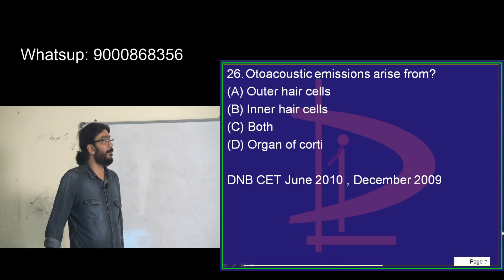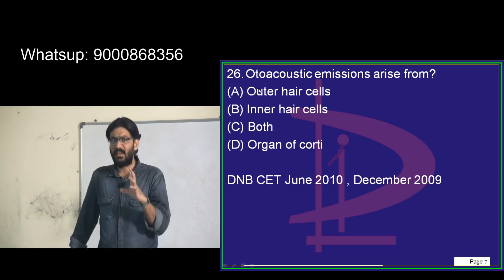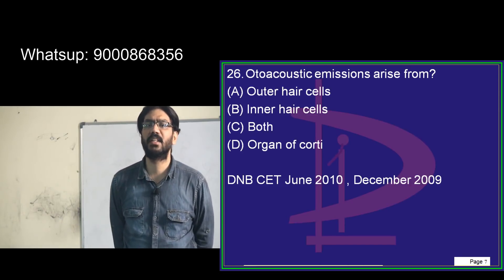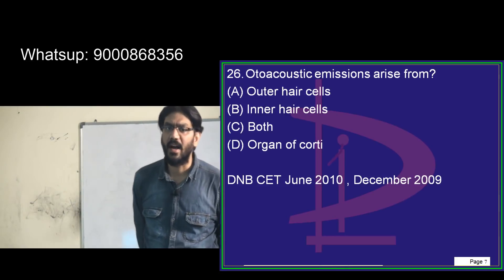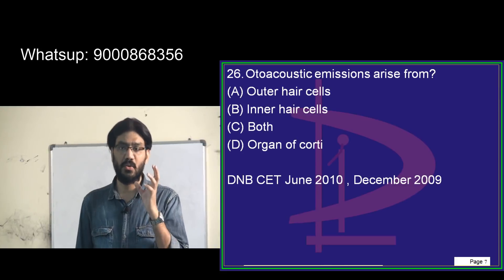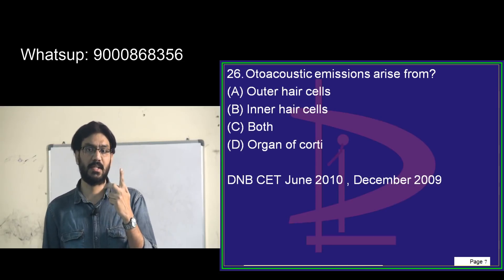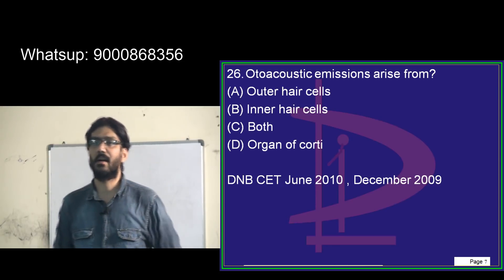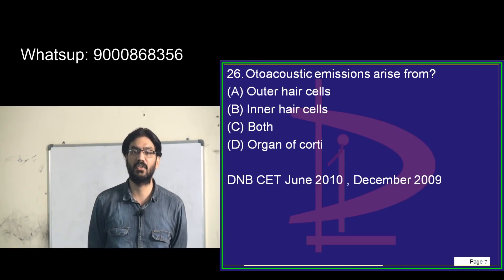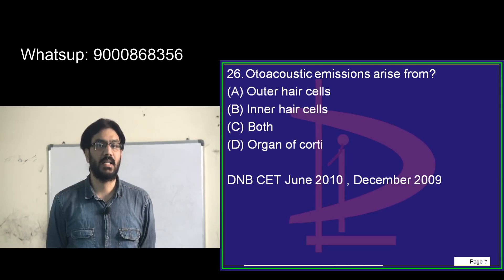Otoacoustic emissions (OAE) arise from outer hair cells. There is something called the Universal Neonatal Hearing Screening Program - when a child is born, you need to screen for deafness. Two important tests are OAE (otoacoustic emissions) and BERA (Brainstem Evoked Response Audiometry). You perform both tests and record pass or fail, then repeat one week later.